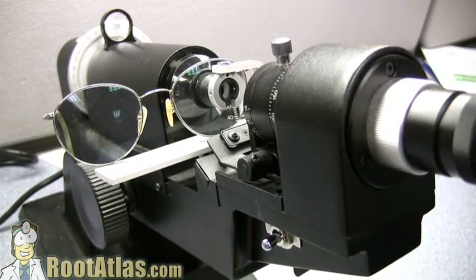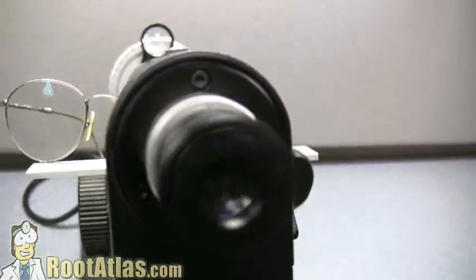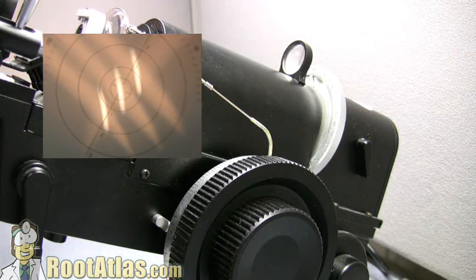Turn it on and then look through this eyepiece, and this is what you should see. The hard part with using this machine is you have to use two dials at the same time.